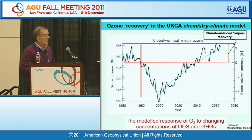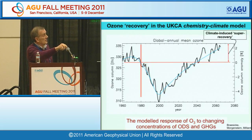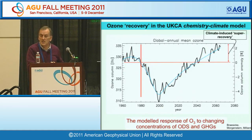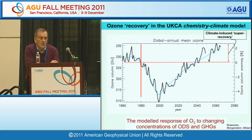My group has been involved in the development of a chemistry-climate model with the Met Office and the University of Leeds. This shows what happens when you run a scenario looking at the recovery of ozone from ozone-depleting substances while also looking at changes in greenhouse gases. The model shows the decline of ozone associated with rising ozone-depleting substances, then recovery as these substances are removed. Then we get a so-called super-recovery of ozone — because the stratosphere is cooling due to increased CO2, and we actually end up with more ozone subsequently. These kind of calculations are quite important.